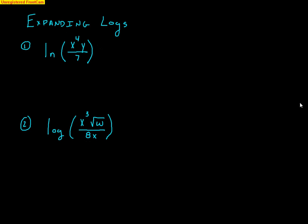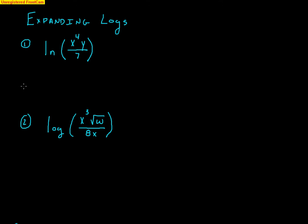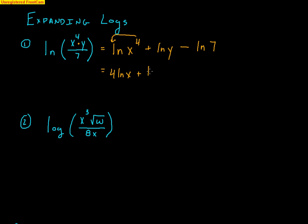Next, we can expand logs — taking one log or natural log and expanding it to multiple logs. Here I have the natural log of (x to the fourth times y, all divided by 7). The multiplication splits apart with addition: natural log of x to the fourth plus natural log of y. The division becomes subtraction: minus natural log of 7. Finally, bring that exponent of 4 down: 4 natural log of x plus natural log of y minus natural log of 7.